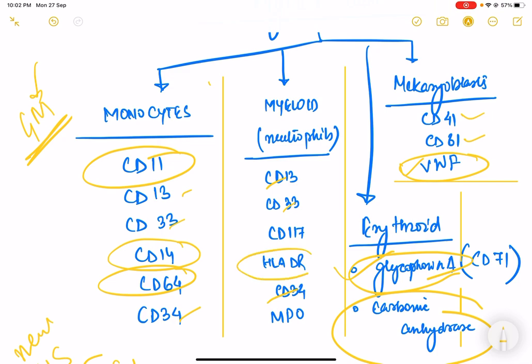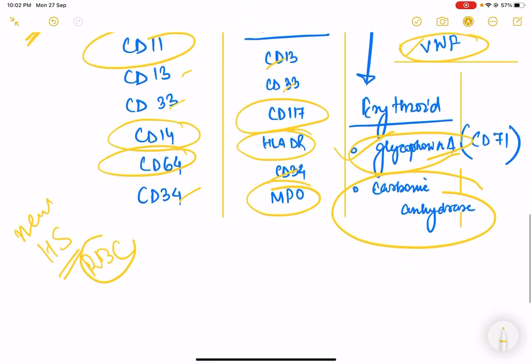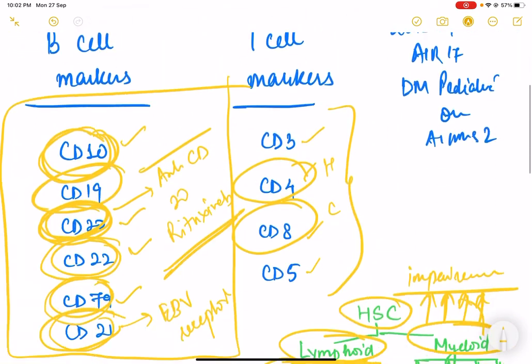Neutrophils are different. HLA DR and CD117. And as you all know, neutrophils contain myeloperoxidase. So MPO will always be present in myeloid blast.